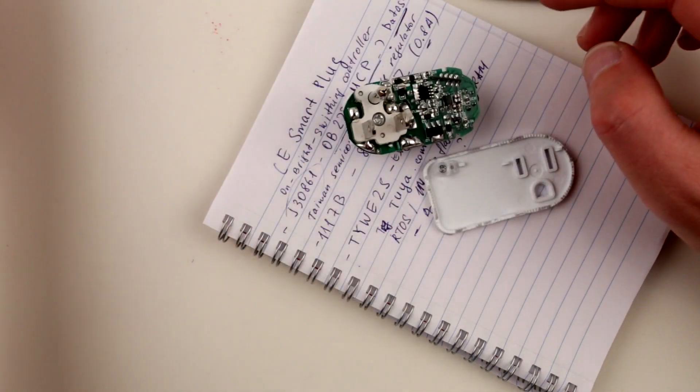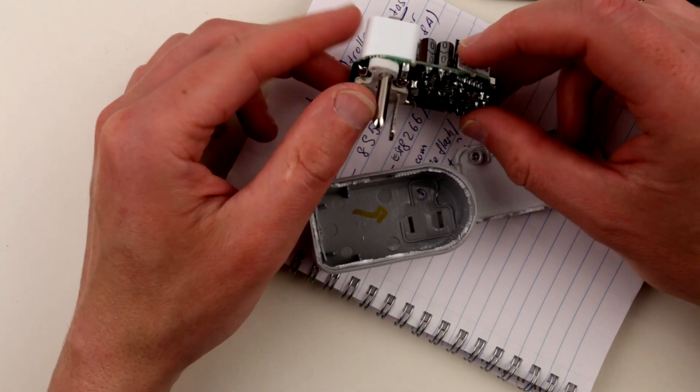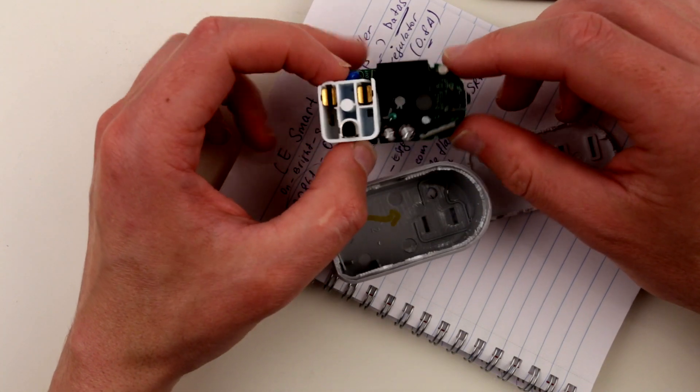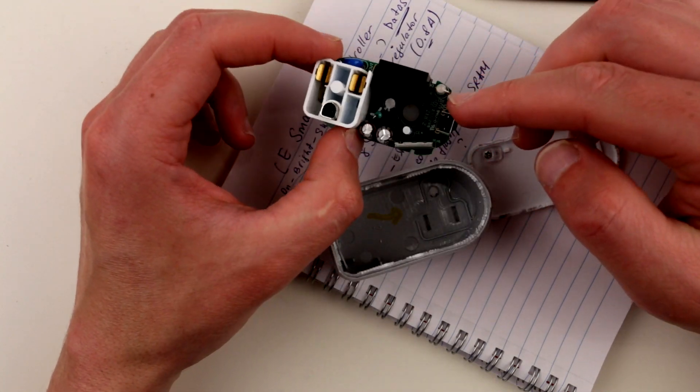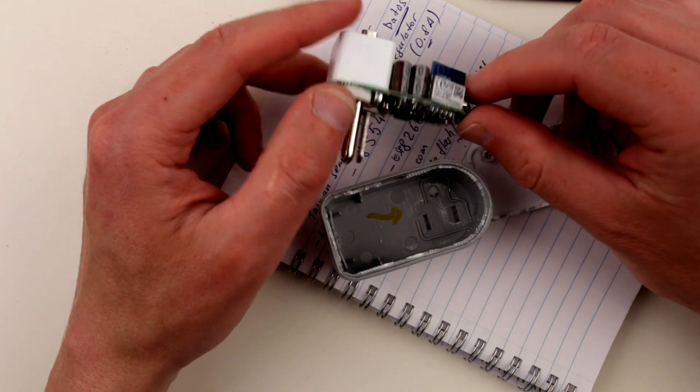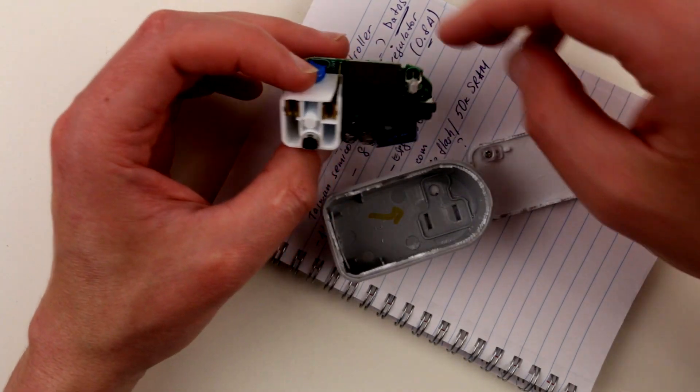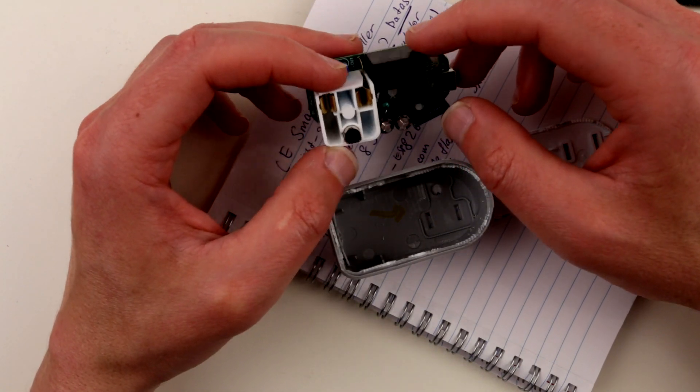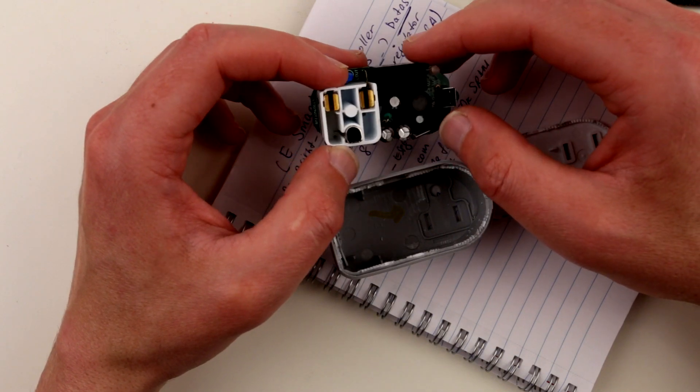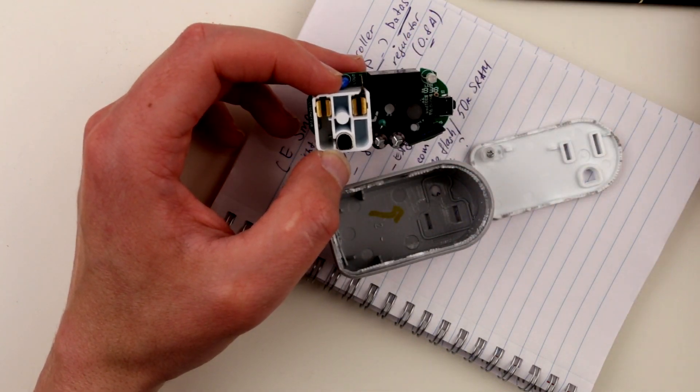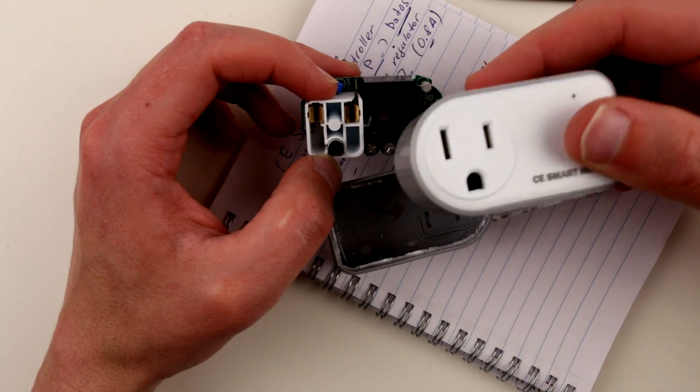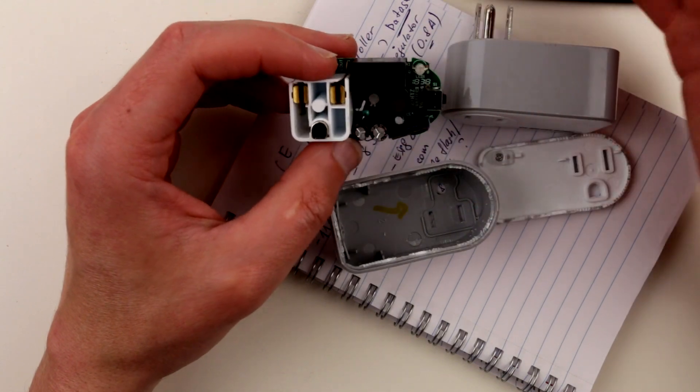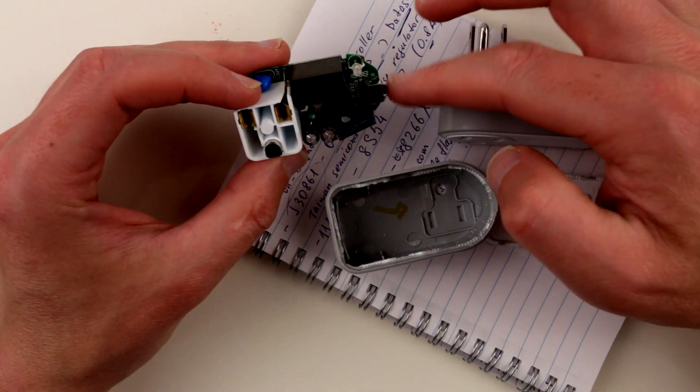So here we have it, this is the CE smart plug from Costco. Not sure, didn't see too many reviews online about this guy, but so far seems to be okay. Some of my friends are using it and they are happy about it. It does the job well, integrates with Google Home and Alexa, very straightforward. I still yet to try one, connect it and see how it operates, but usually it has to be pretty simple.